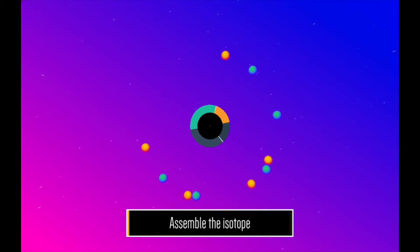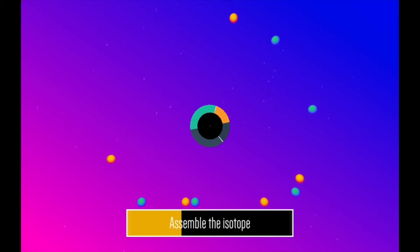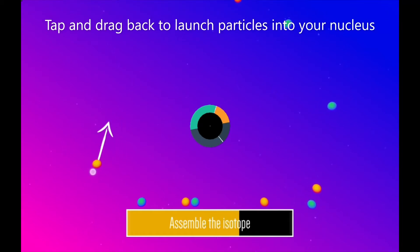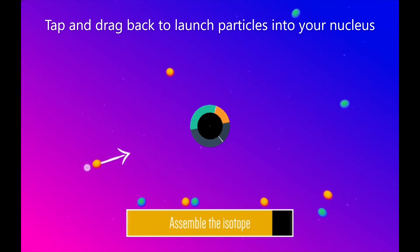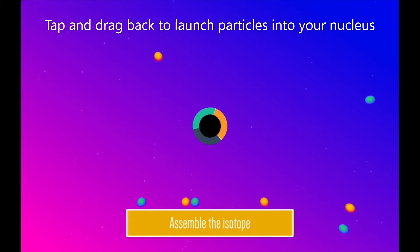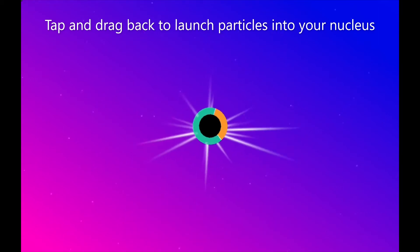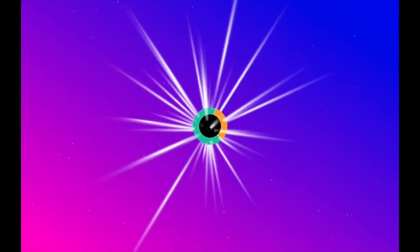The last part: what you get to do is actually assemble the nucleus you're trying to make — Helium-6 in this case. At our lab, we don't have the luxury of actually putting together whatever isotope we want, but this is a game so you get to do what you need. If you tap on one of these little protons or neutrons and pull back, you see an arrow — it's like a slingshot. I'm pulling it back and the arrow helps me aim so I can shoot it at the nucleus in the middle. It's kind of a pie chart. Now I've put together enough to make Helium-6. Awesome.